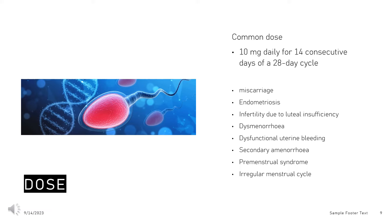Endometrial protection during menopausal hormonal replacement therapy, including mild vasomotor symptoms associated with menopause and prophylaxis of post-menopausal osteoporosis (Adult): In combination with continuous estrogen treatment (continuous sequential therapy), 10 mg daily for 14 consecutive days of a 28-day cycle. In combination with cyclical estrogen therapy, 10 mg daily for the last 12 to 14 days of estrogen treatment.